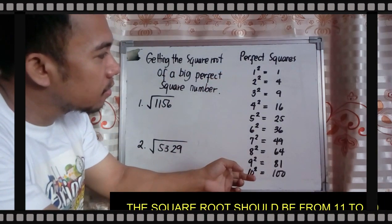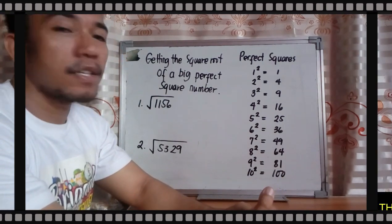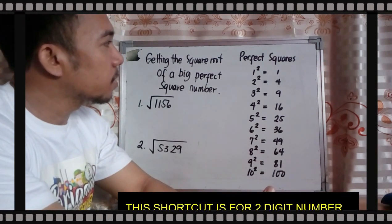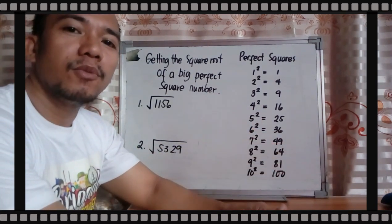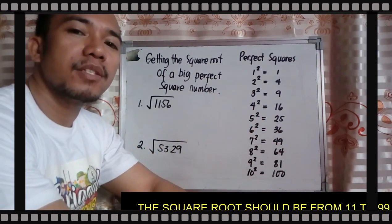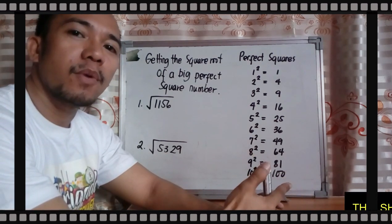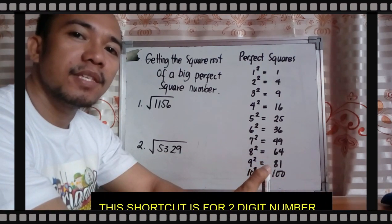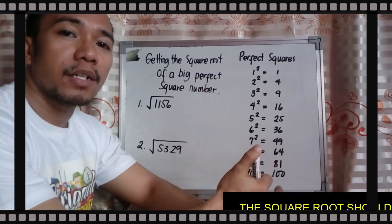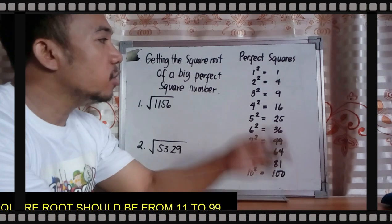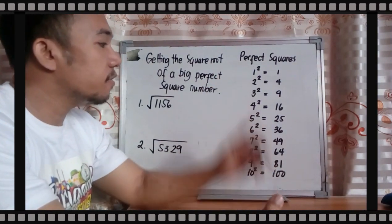Here is the list of perfect square numbers: 1 squared equals 1, 2 squared equals 4, 3 squared equals 9, 4 squared equals 16, 5 squared equals 25, 6 squared equals 36, and so on up to 10 squared equals 100.